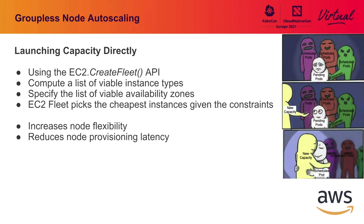At the end of the day, you are still getting one node that those pods get packed onto. This gives us massively increased node flexibility and a really nice failover behavior if a particular instance type is out of stock. It also significantly reduces node provisioning latency. With autoscaling groups, there's a reconciliation loop overhead — we found that with ASG, it was adding about 30 seconds from the time you increment the node count to the time the node is brought up. By removing that and asking EC2 to create fleet directly, we get instances 30 seconds faster.